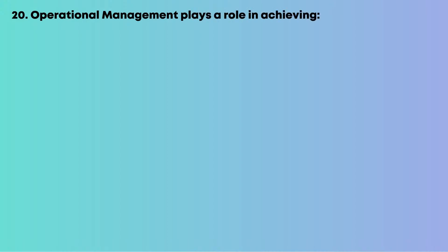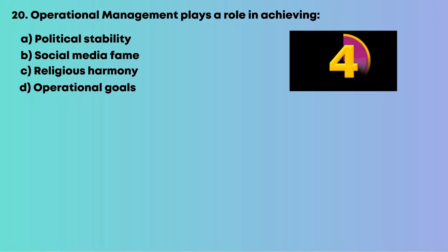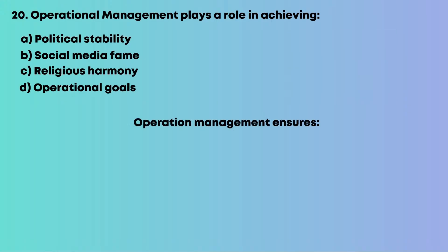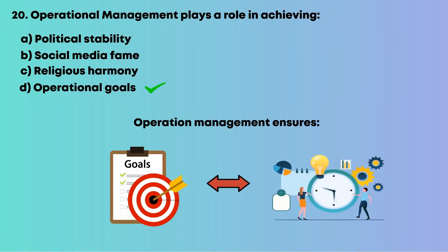Question 20: Operational management plays a role in achieving: A, political stability; B, social media fame; C, religious harmony; D, operational goals. Operations management ensures organizational goals are met efficiently. The right answer is D, operational goals.